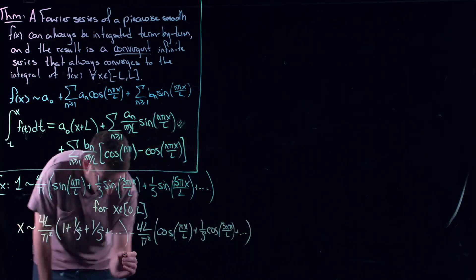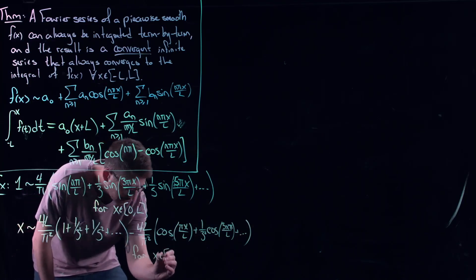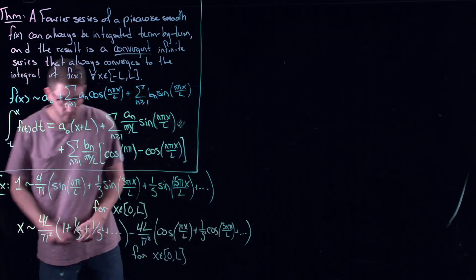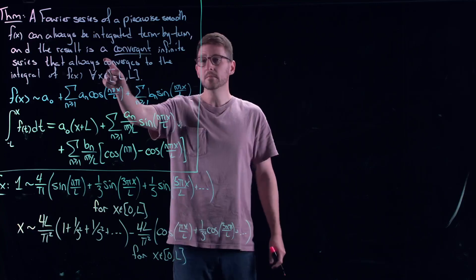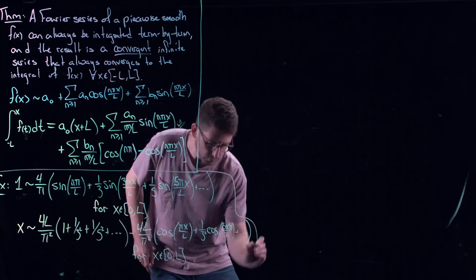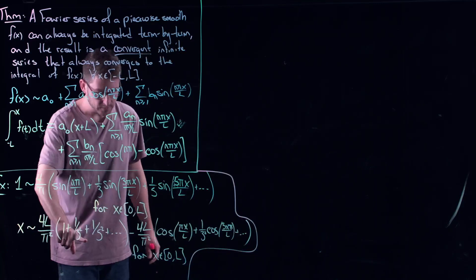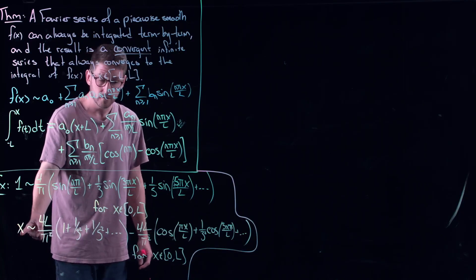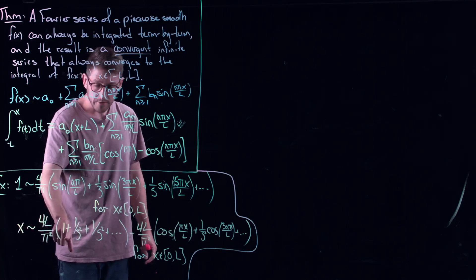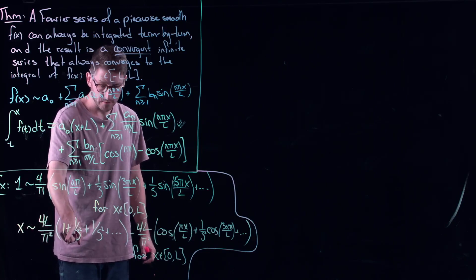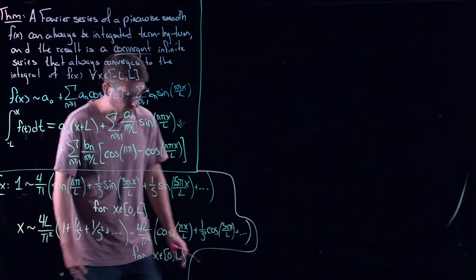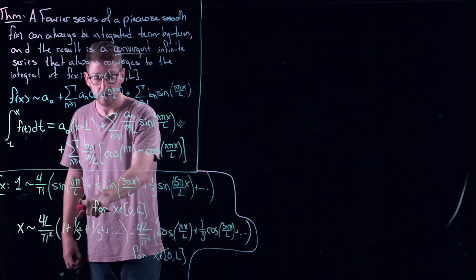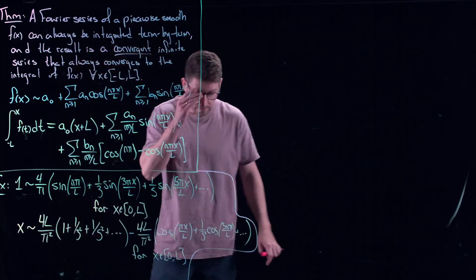This is for x in 0 to l. The theorem tells me this is equal. So technically I have a cosine series — an even extension of x — which is one we sort of already computed. But we also have this infinite series that pops up: 1 plus 1 over 3 squared plus 1 over 5 squared. Since this is a cosine series, there's no constant term that came up because I just had a sine series to start with.